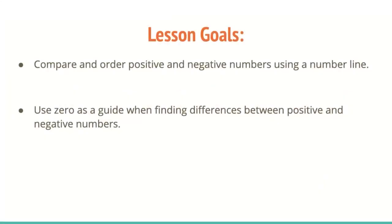Now our goals for this lesson are twofold. One, we're going to compare and order positive and negative numbers using a number line. And then we're also going to use zero as a guide when finding differences between positive and negative numbers.